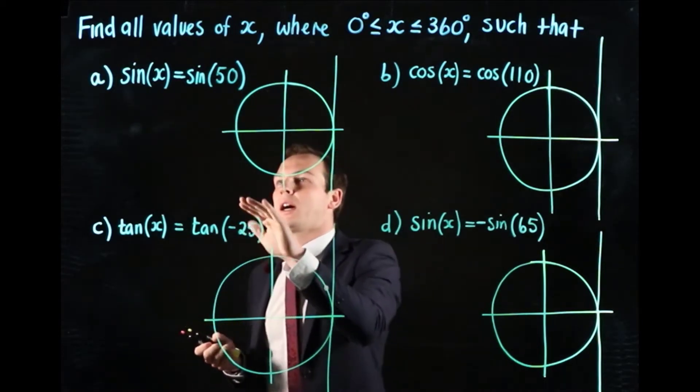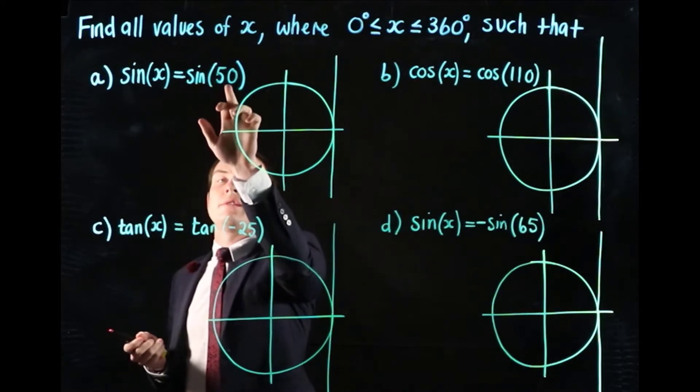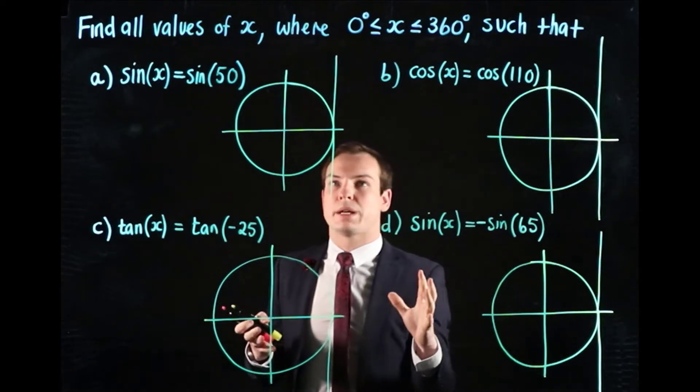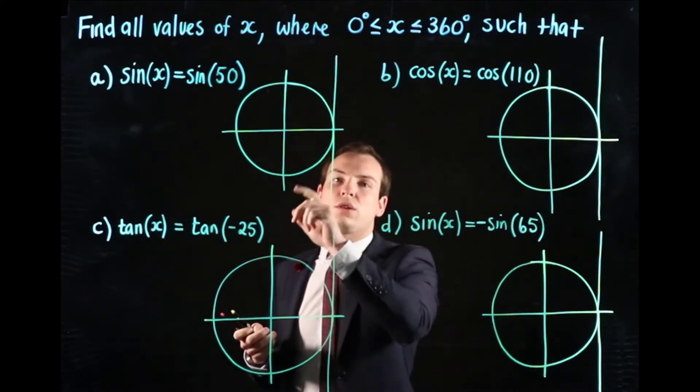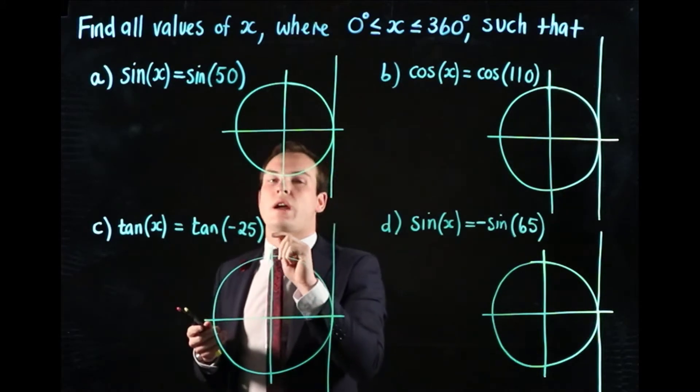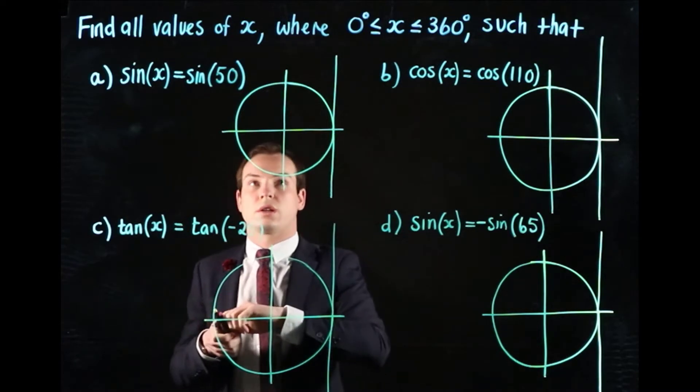For part a, we're asked to find x such that sin(x) equals sin(50). The first thing we need to do is have a unit circle in front of us, and then we want to locate sin of 50, so we want to draw the angle of 50 degrees onto our unit circle.